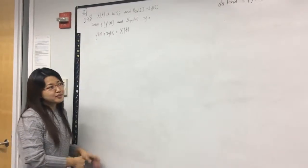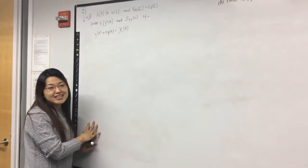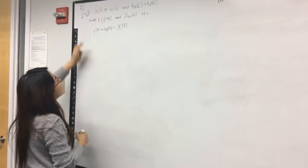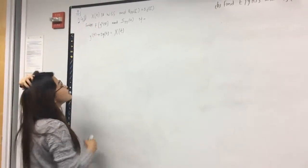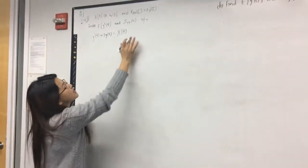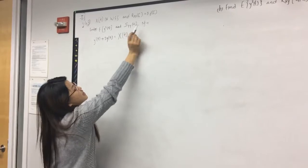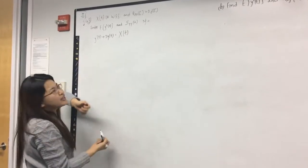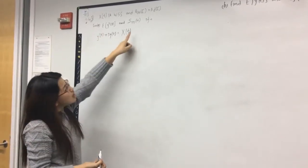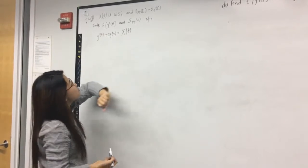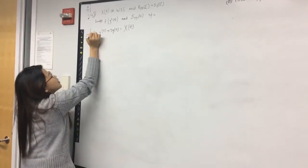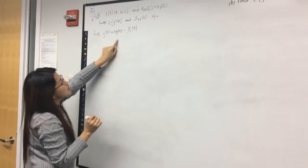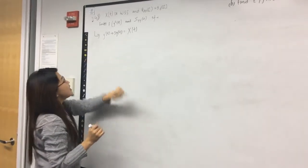I'm going to do one of the problems from chapter 9 — it's number 43. We are given x(t) as a wide-sense stationary process, and the autocorrelation function of x is given as 5δ(t). We have to find the expected value of y²(t) and the output power spectrum when given the equation: y'(t) + 3y(t) = x(t).